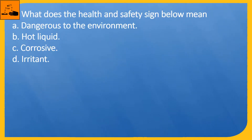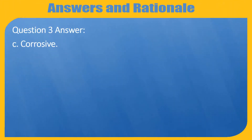Question 3. What does the health and safety sign below mean? A. Dangerous to the environment. B. Hot liquid. C. Corrosive. D. Irritant. Question 3 answer: C.